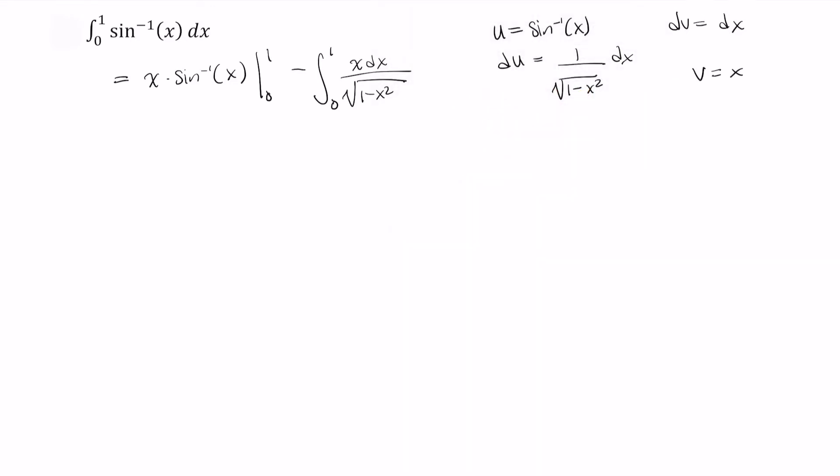Now this is in essence two different problems, so I'm going to call this one A and this one here B. And our integral from 0 to 1 of sine inverse of x dx is equal to A minus, because we have this minus sign here, B. So let's work these out.